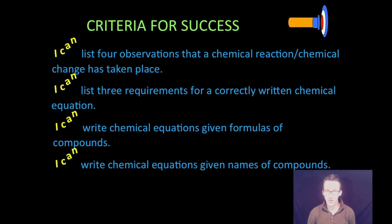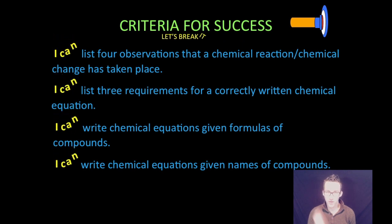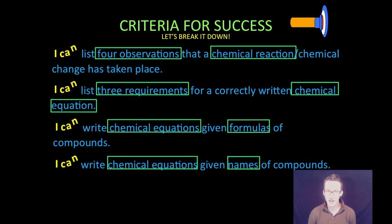If we break that down a little bit, we are going to first list four observations that a chemical reaction or chemical change has taken place. Two, we're going to list three requirements for a correctly written chemical equation.